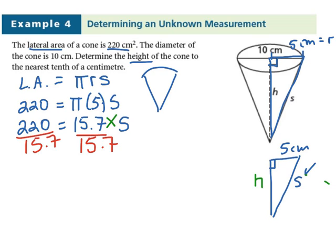In order to cancel out the 15.7 and isolate the slanted height, we have to divide 15.7 by both sides of the equation. And the reason why we do that is because 15.7 ÷ 15.7 will give you 1, or just s. Well, on the other hand, 220 ÷ 15.7 is 14. So, 14 is equivalent to our slanted height, exactly 14 centimeters.